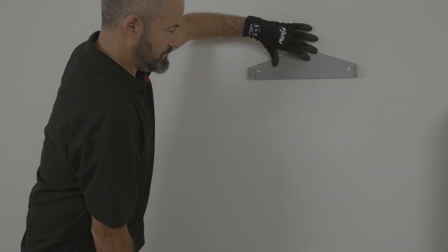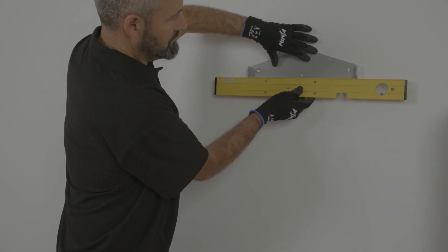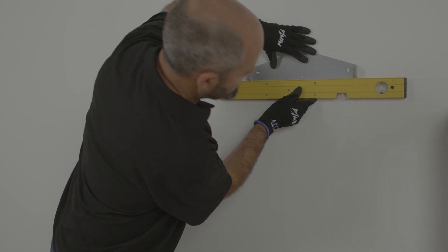To start with, mount the bracket on the wall and fix it with appropriate fixings to support the weight of the inverter depending on the wall material.